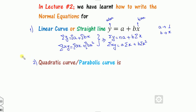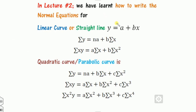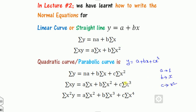Similarly, we can find the normal equations for the parabolic line. For the parabolic or quadratic, the equation is y = a + bx + cx². The coefficient of a is 1, so the first equation is obtained by multiplying by 1 and putting summation. The coefficient of b is x and the coefficient of c is x², giving three normal equations.